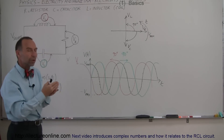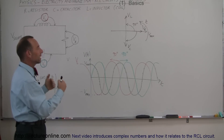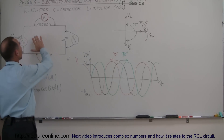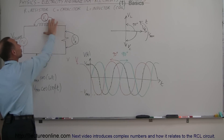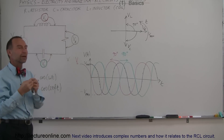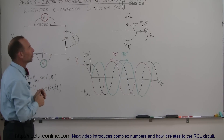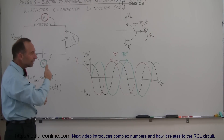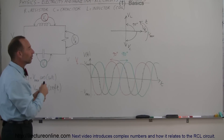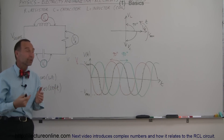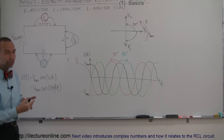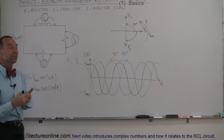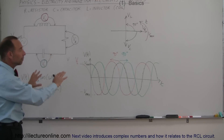We're now going to use complex algebra and complex numbers to indicate how we denote that phase difference, so that we can find the total impedance across the circuit and the current in the circuit. That's the objective of these videos — I'll lead you through it step by step so that by the end you'll know exactly how to deal with RCL circuits: how to find the current, how to find the voltage across the components, and how to find the impedance in the whole circuit.